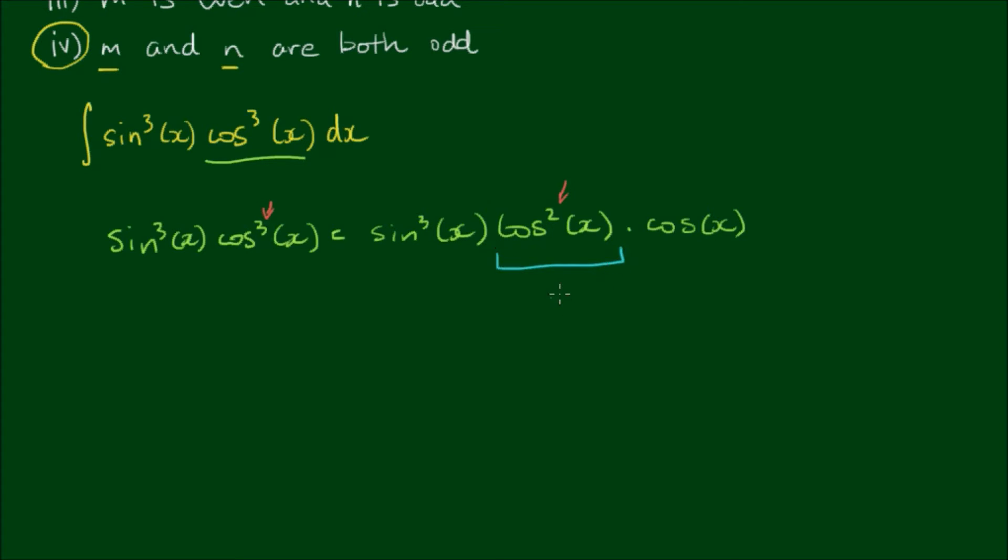Well, with this term cosine squared, we can use the Pythagorean identity, which is cos squared x plus sine squared x is equal to 1. So we can write this as 1 minus sine squared x.